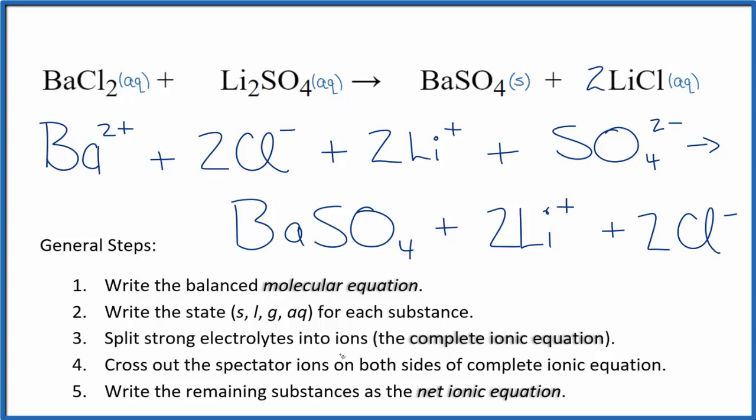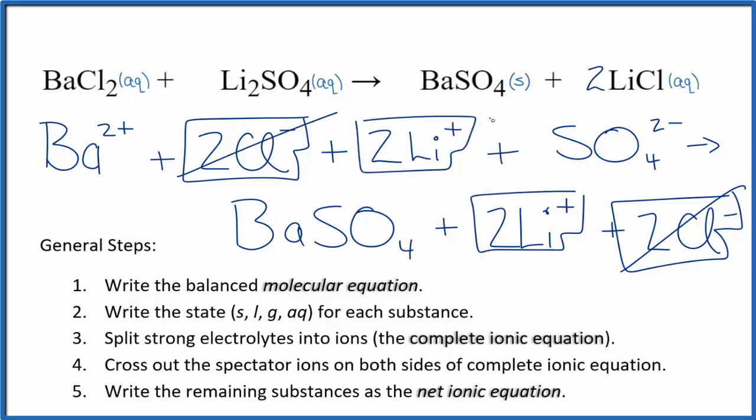Now we can cross out the spectator ions. They're on both sides. I see in the reactants, I have two of these chloride ions. Again, I have those in the products. Spectator ions. Cross them out. Two lithium ions. Again, in the products, two lithium ions. These are spectator ions. Cross those out.